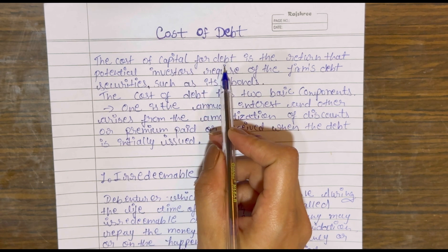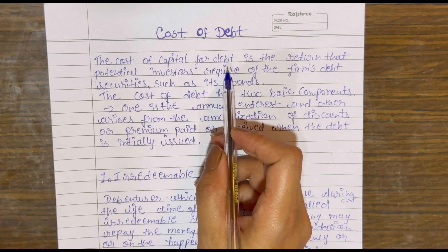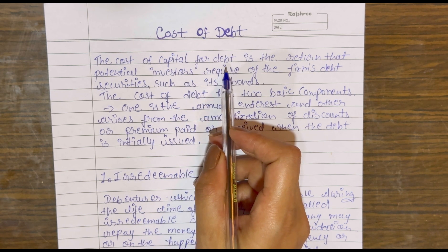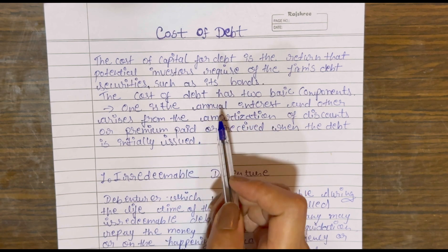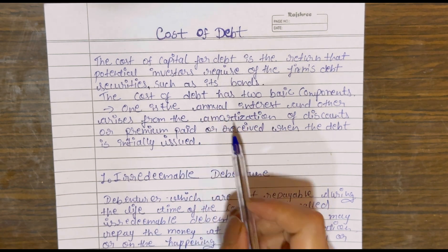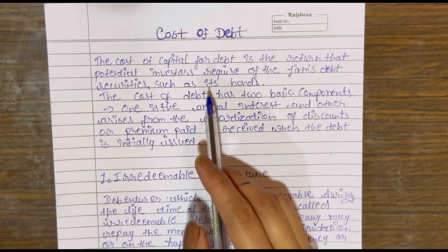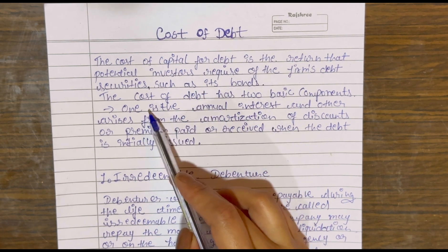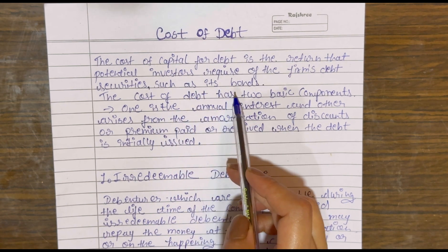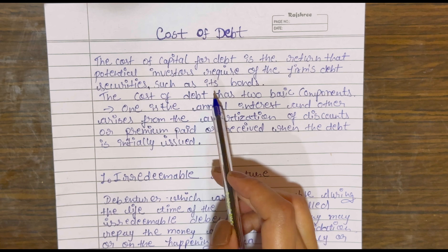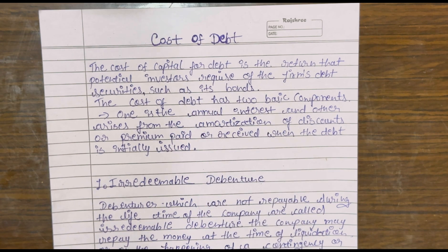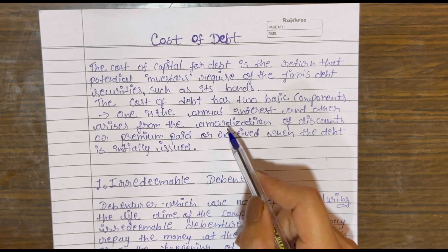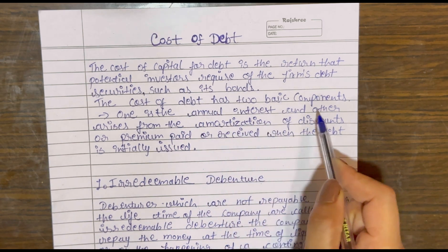Let's talk about debt. You call these securities — which means your bonds or debentures. We basically calculate that if we issue a debenture, then how much cost comes from it. So the cost of debt is basically two components.